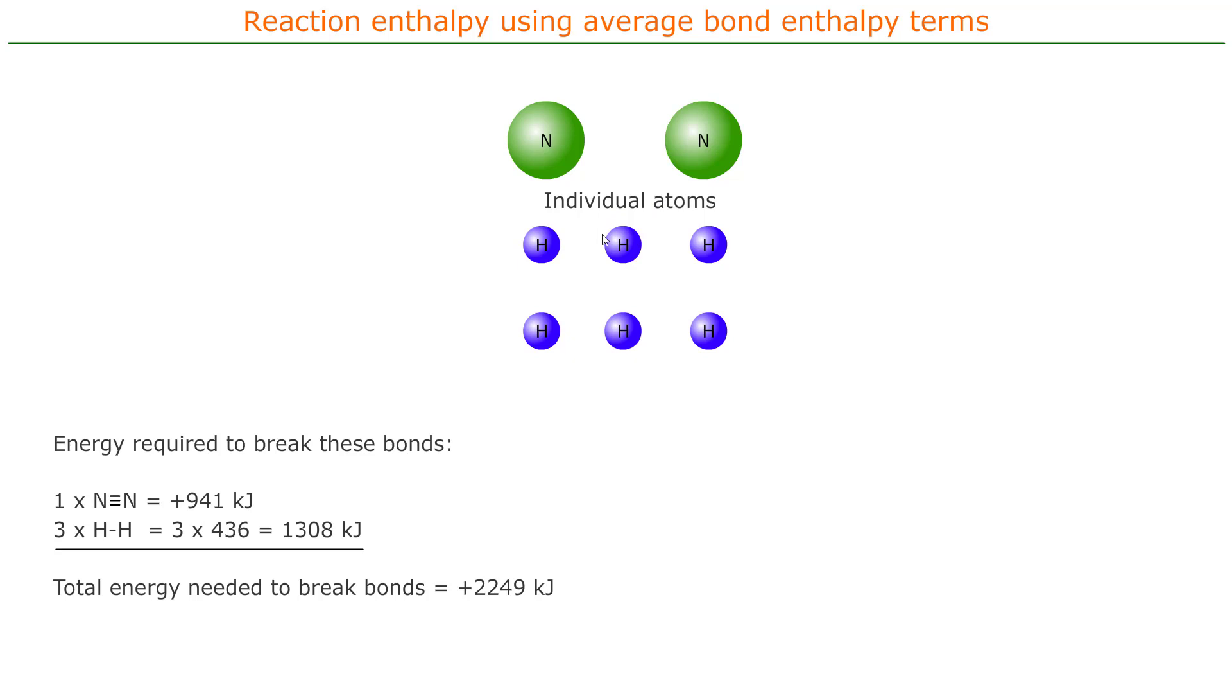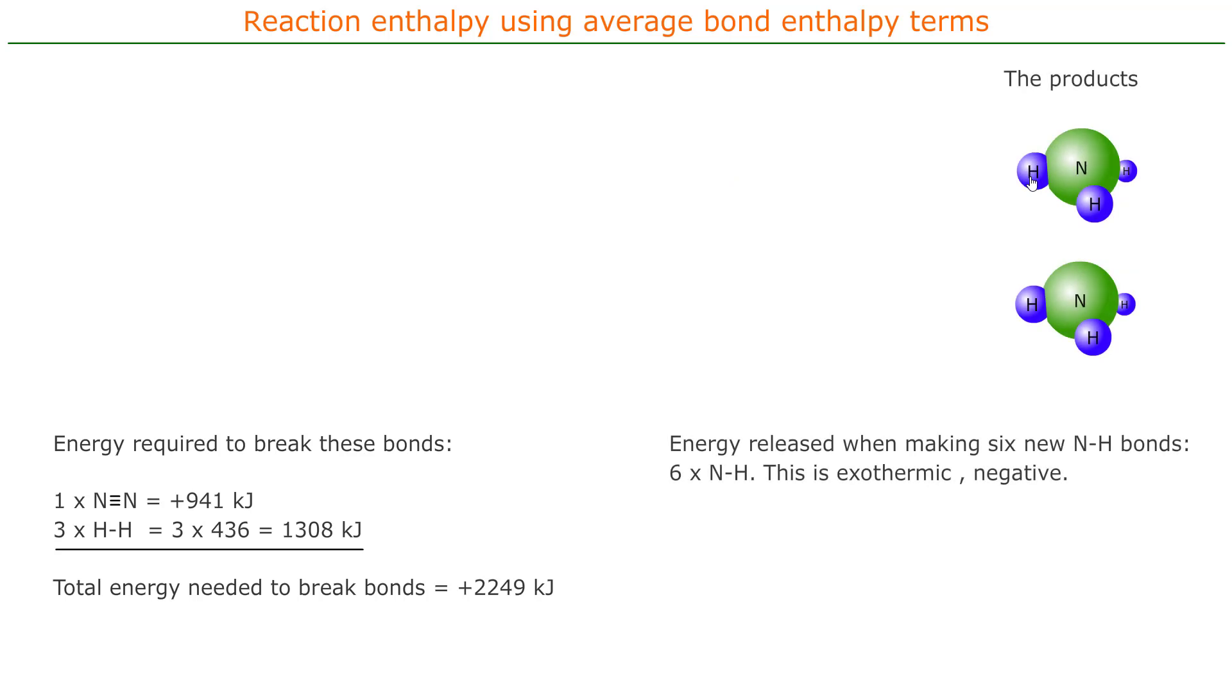Well, the next thing is to use the individual atoms to make the products. And the products are the ammonia molecules. And you'll see here there are two ammonia molecules, which contain six, in total, six nitrogen-hydrogen bonds. So the energy released when making six nitrogen-hydrogen bonds is six times the nitrogen-hydrogen bond energy.